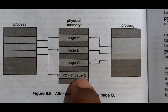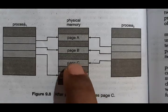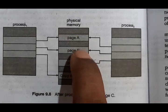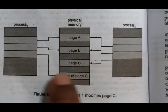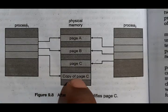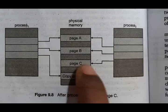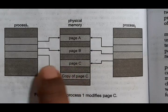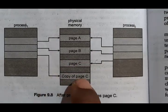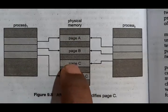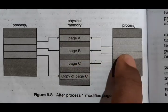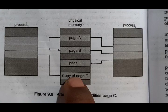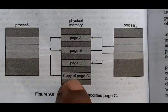Initially, page C is shared by both processes. When process one wants to modify it, only that page is copied — instead of copying all pages. Process one allocates only a copy of page C. The original page C is allocated by process two, not process one. Process one now uses only its modified copy of page C, while process two continues using the original.